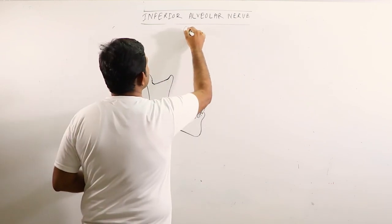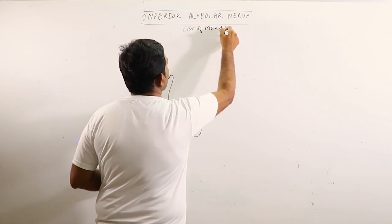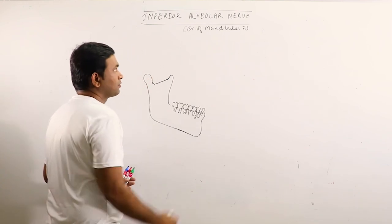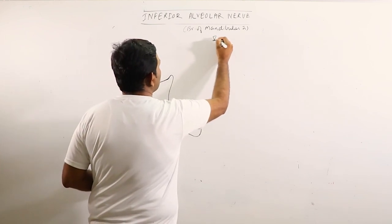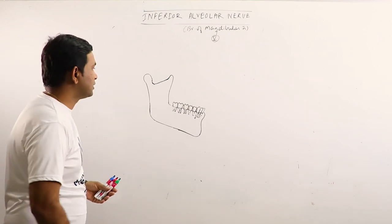Inferior alveolar nerve is a branch of the mandibular nerve. We know that mandibular nerve is basically a branch of the 5th cranial nerve, the trigeminal nerve.